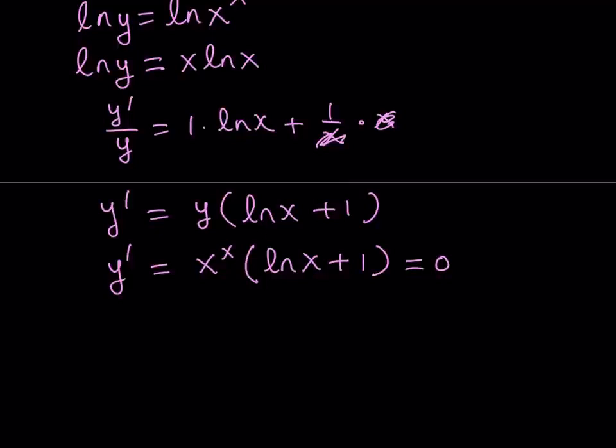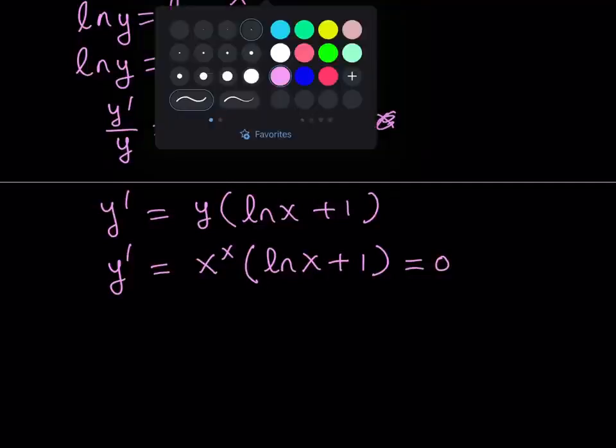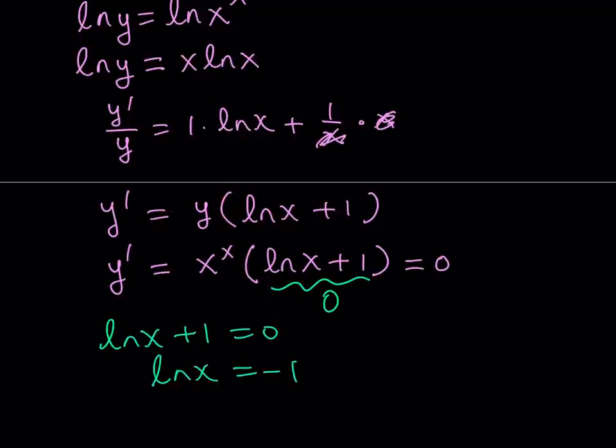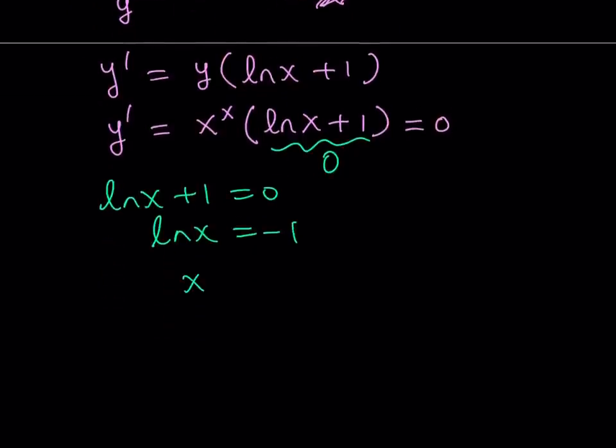So we can just set this equal to 0. Obviously, x to the power of x is not going to be 0. And don't say 0 to the power of 0 is equal to 0, because it's not. As you know, if you know otherwise, you can just go ahead and write it down. But we're going to be setting this equal to 0. And from here, it's very easy to solve. ln x plus 1 is equal to 0. ln x is equal to negative 1. And this gives us x equals e to the power of negative 1, which is 1 over e.